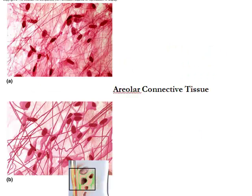The first type of connective tissue we're going to look at is areolar connective tissue. This falls under the class of loose connective tissue. It is a fairly loose arrangement of cells, fibers, and ground substance. What you see here are a lot of individual cells called fibroblasts — not so densely packed together like you would see with epithelium.